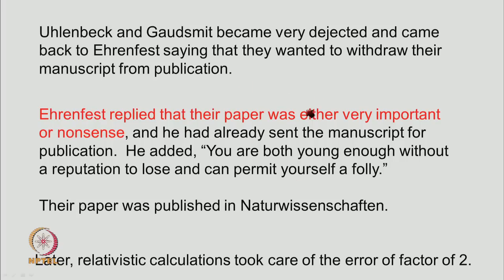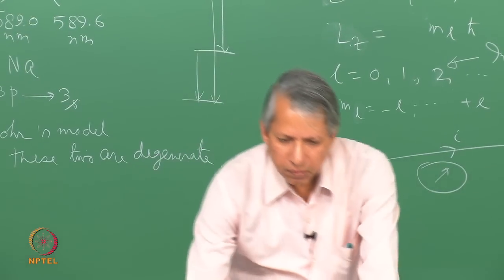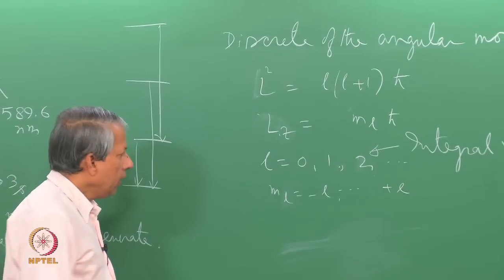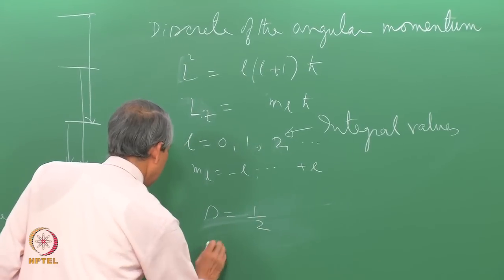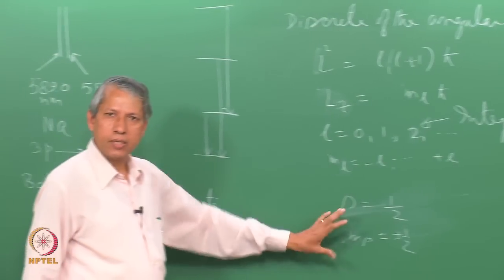So, Uhlenbeck-Goudsmit became very dejected and came back to Ehrenfest saying that they wanted to withdraw their paper from publication. But Ehrenfest replied that their paper was either very important or nonsense and he has already sent the manuscript for publication. Then he added that you are both young enough and you have no reputation so far to lose. So, you can permit yourself a failing, that is if the suggestion of yours turns out to be important, you will become famous, but if it does turn out to be nonsense, then you do not lose anything. The paper was published in this journal, Naturwissenschaften and later calculation using relativistic correction also took care of the factor of 2 which initially they had trouble explaining. So, this suggestion of Uhlenbeck-Goudsmit did turn out to be very, very important. Now, angular momentum integral kind, angular momentum can also be half integral that is S is equal to half, MS equal to plus minus half is also possible here. So, from integral to non-integral that is a very drastic difference.